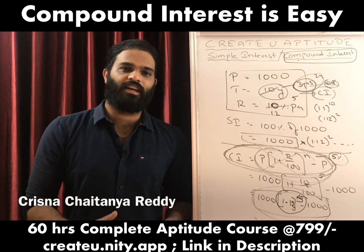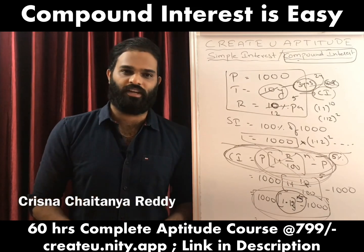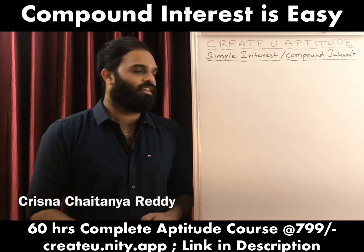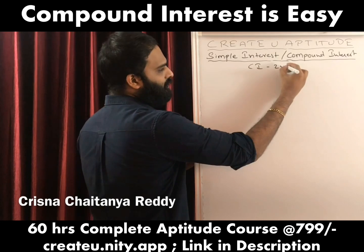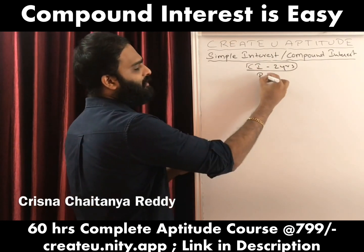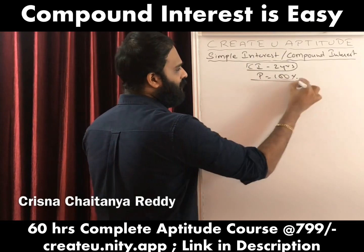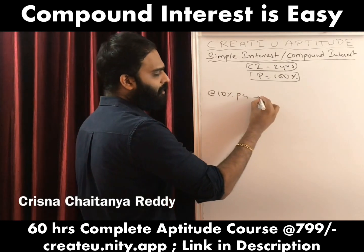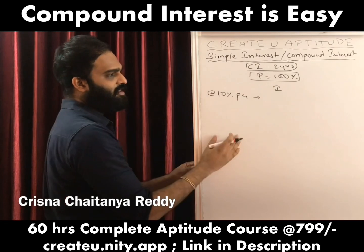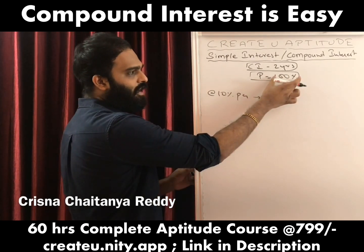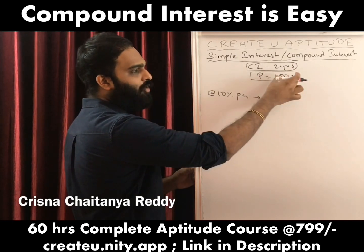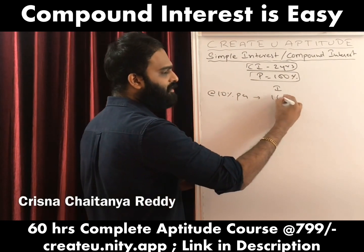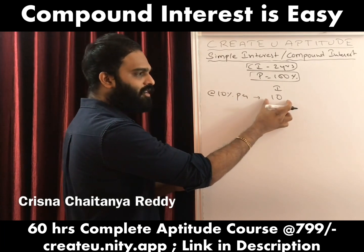Before we get into questions, let us understand how to calculate compound interest for 2 years. Please pay attention. For compound interest for 2 years, the principal remains 100%. If the rate of interest is 10% per annum, I calculate 10% on 100 for the first year, which gives 10. For the first year, I have no choice but to calculate interest on the principal, so simple interest equals compound interest for the first year.